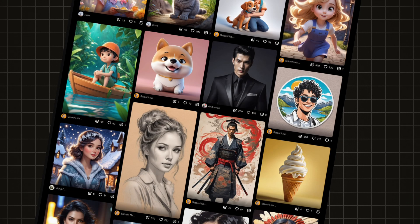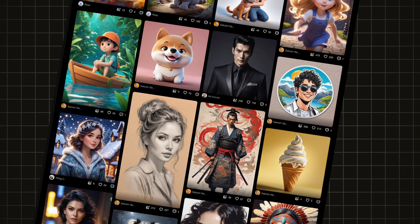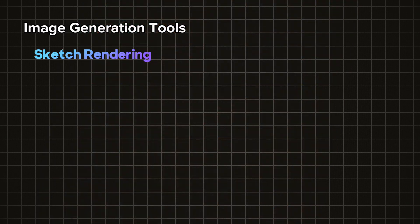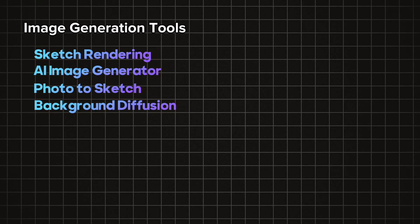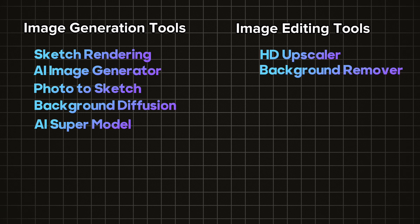In this video, I'm going to try out the following tools. First, we'll explore the image generation tools: sketch rendering, AI image generator, photo to sketch, background diffusion, and AI supermodel. Then from the image editing tools, we will try HD upscaler, background remover, and outpainting.